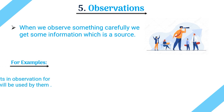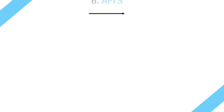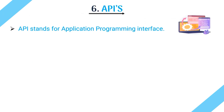The fifth source is observations. When we observe something carefully, we get useful information. For example, scientists observe insects for years, and that data is used in their research. This makes observation a valid data source.